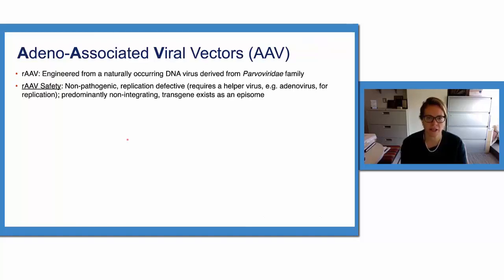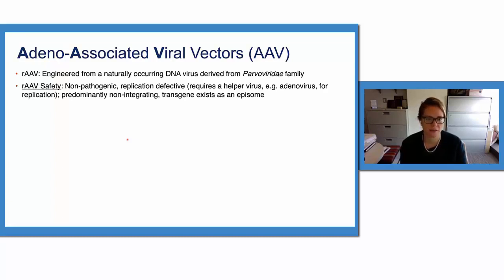The bulk of clinical efforts in hemophilia gene therapy have coalesced around the administration of systemic AAV vectors, which are engineered from a naturally occurring associated virus — a DNA virus derived from the parvovirus family. From a safety standpoint, AAV is non-pathogenic, so it's not known to cause any human disease, is replication defective, requires a helper virus for replication, and is predominantly non-integrating. The transgene itself exists predominantly as a stable episome.